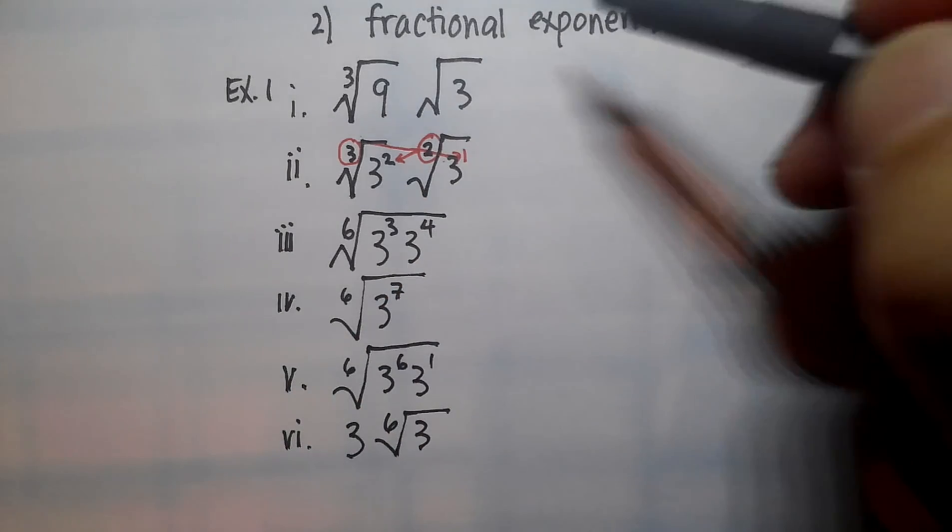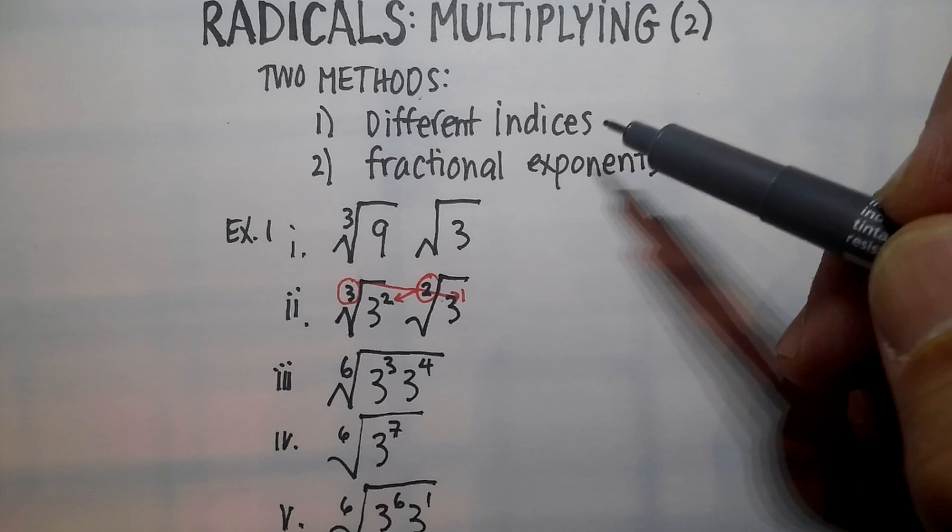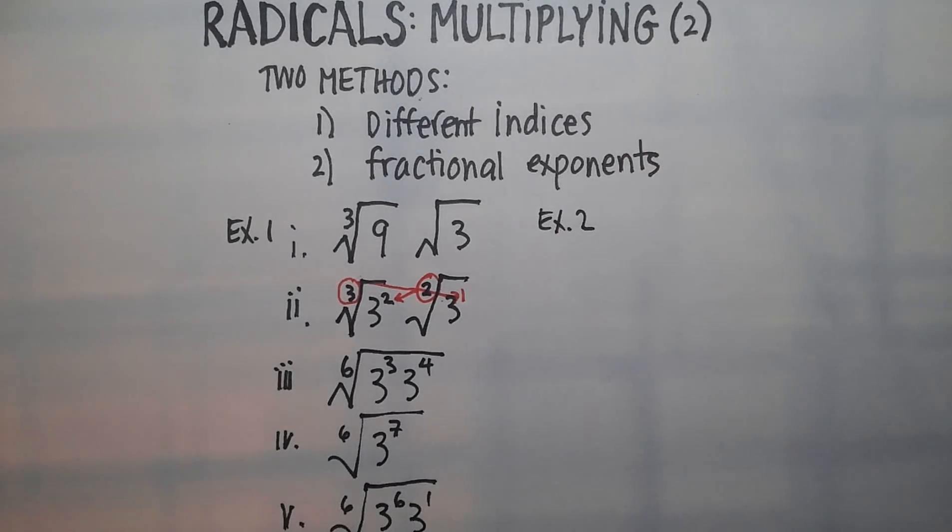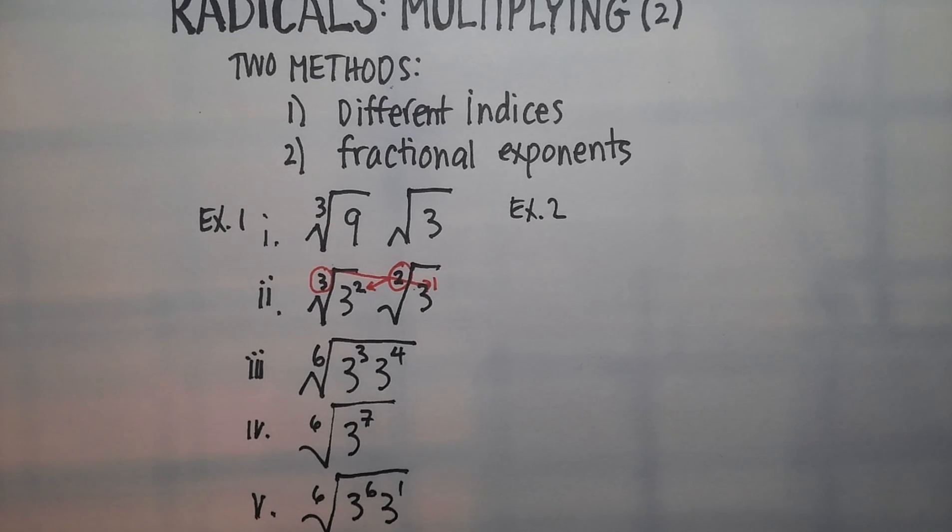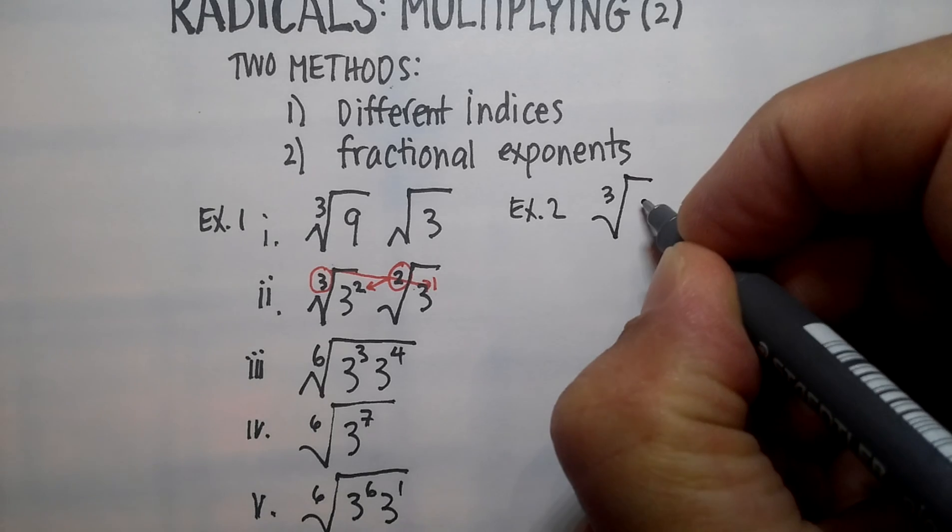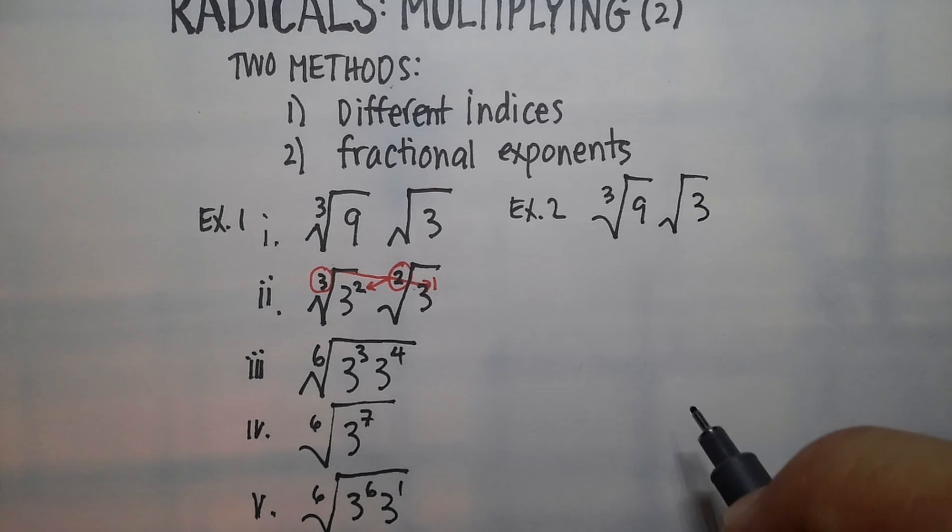So that's how to multiply when you have two different indices, all right? Now I'm going to go fractional exponents right next to it, and I'll show you how to do that. So again, same idea.